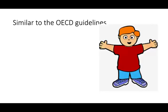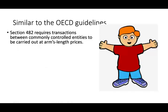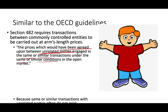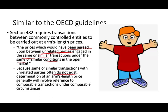The IRS follows guidelines similar to the OECD — specifically, arm's length pricing. The arm's length price is the price that would have been agreed upon between unrelated parties engaged in the same or similar transaction under the same or similar circumstances in the open market. Arm's length means: what price would you charge someone who is not your affiliate, parent, subsidiary, or sister company?